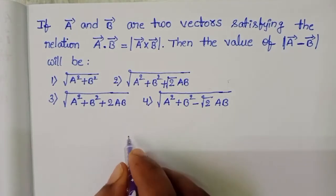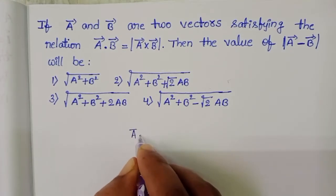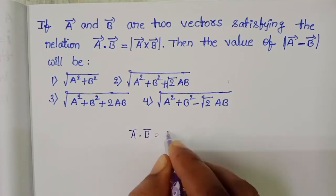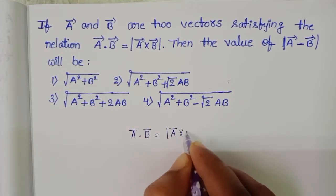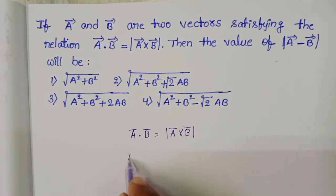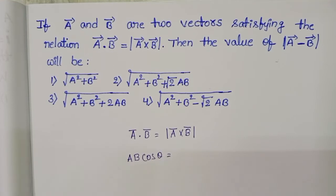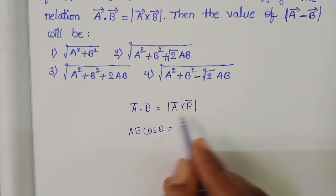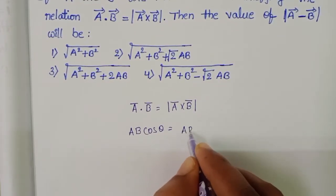Here the given condition A bar dot B bar equals mod of A bar cross B bar. A bar dot B bar equals AB cos theta, and A bar cross B bar equals AB sin theta.